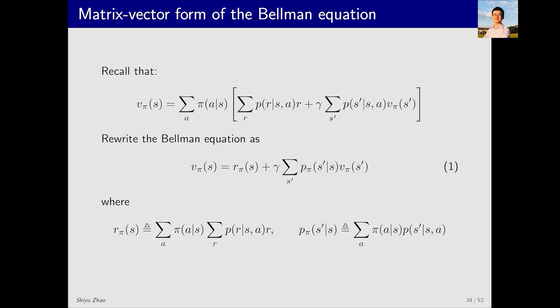Let's now see how to derive the matrix vector form. First, this is the Bellman equation that we have just derived. We rewrite it by combining this term with this term resulting in r_π(s), which represents the average immediate reward I can receive starting from the current state as shown below. Then, by combining this term with this term, we obtain this p_π, which is the probability from s to s', as shown below.